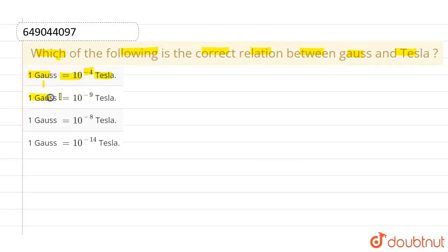The given options are: 1 Gauss equals to 10 to the power minus 4 Tesla, 1 Gauss equals to 10 to the power minus 9 Tesla, 1 Gauss equals to 10 to the power minus 8 Tesla, and the last given option is 1 Gauss equals to 10 to the power minus 14 Tesla.